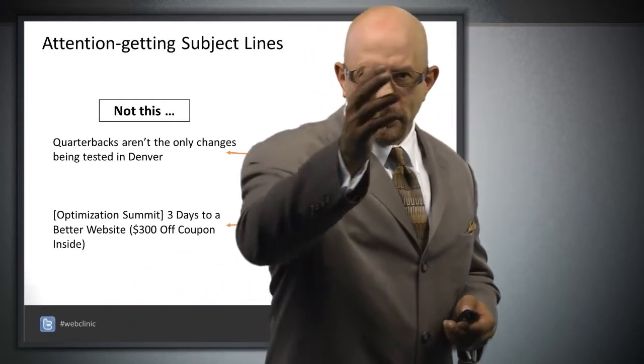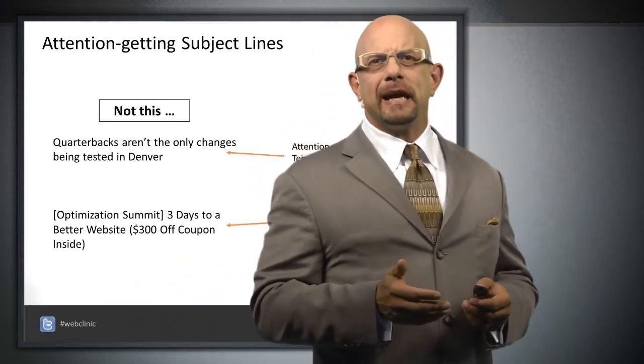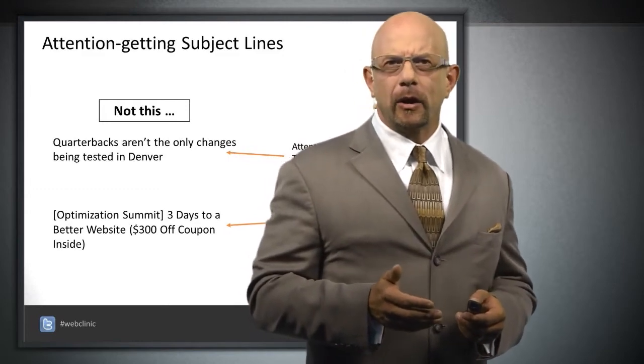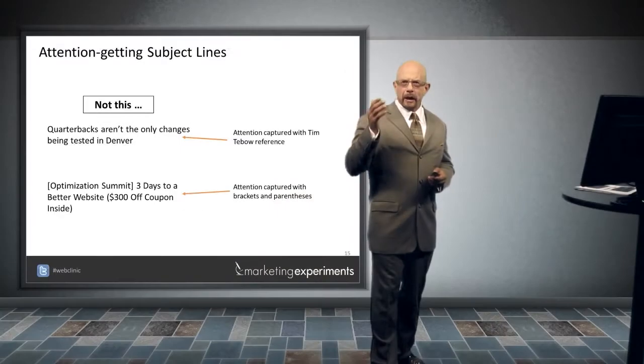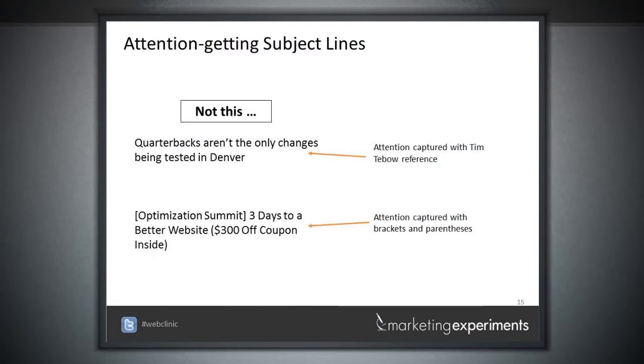Look at it again. You'll see another example. Optimization Summit. Three days to a better website. $300 off the coupon inside. Now, there's a Timption caption with the brackets and the parentheses, but it doesn't convert properly, because it's lost between all of those connections. There's no single thought flow. Meaning can't be made, transferred directly into attention.